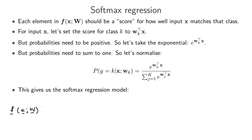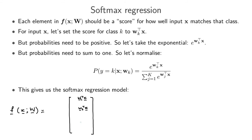The model outputs a vector: the first element gives the probability of the first class, the second element the second class, and so on up to the kth element. Let's forget about probabilities for a moment and think of these elements as scores. For some input x, the score for class k is set to w_k^T x — that is, the dot product of the kth parameter vector with x. For the first class we have w_1^T x, for the second class w_2^T x, and so on up to the capital Kth class.